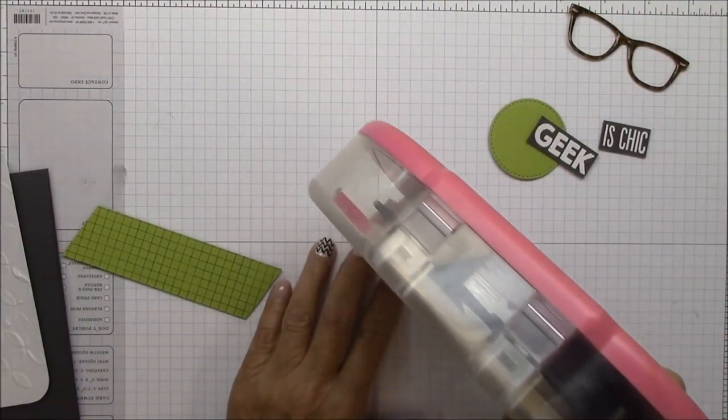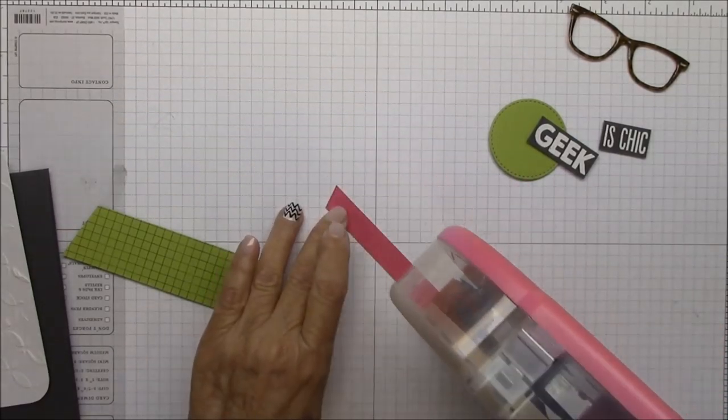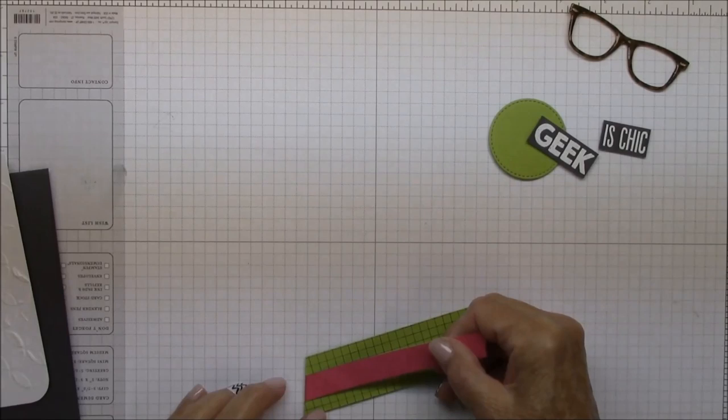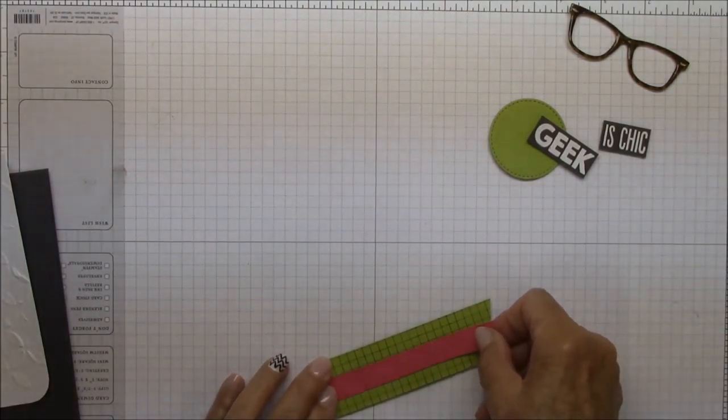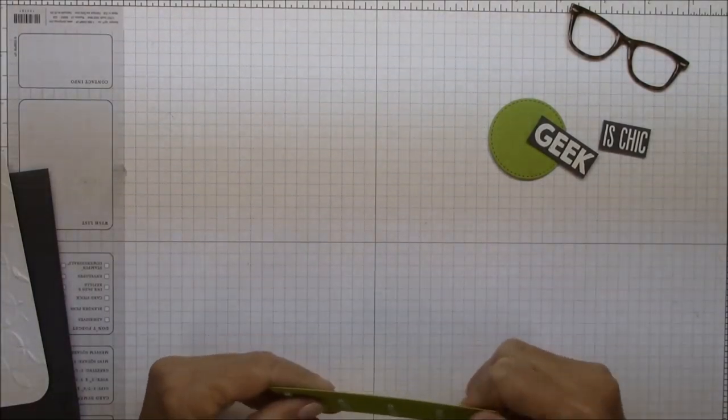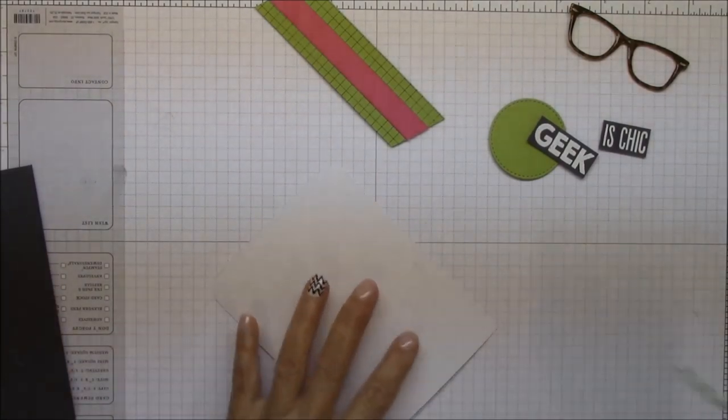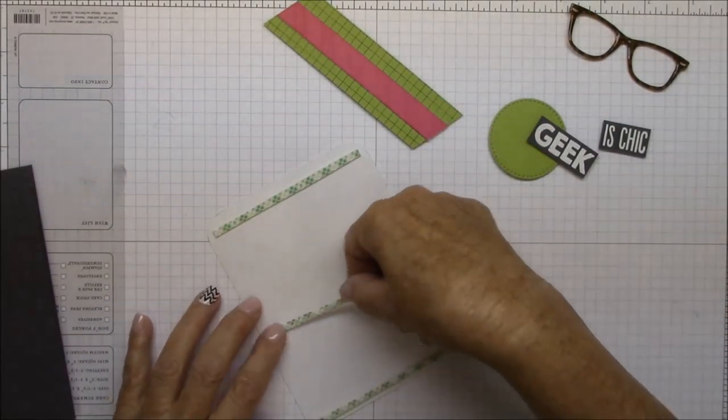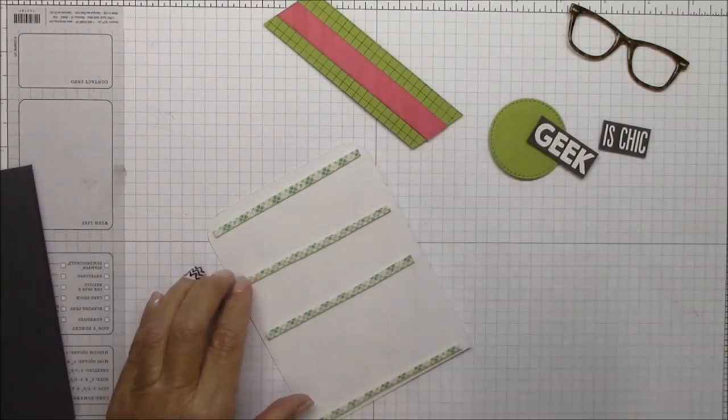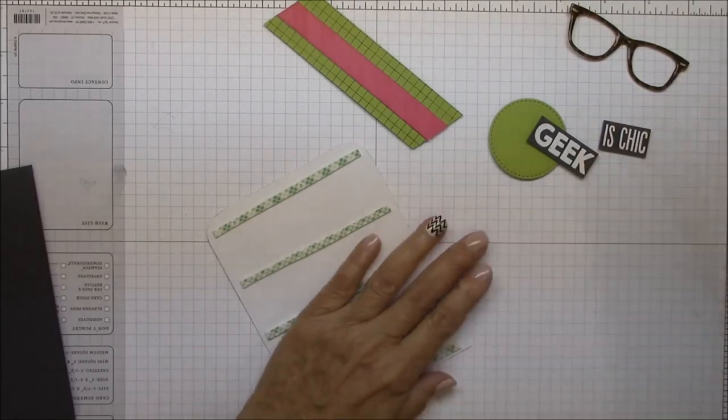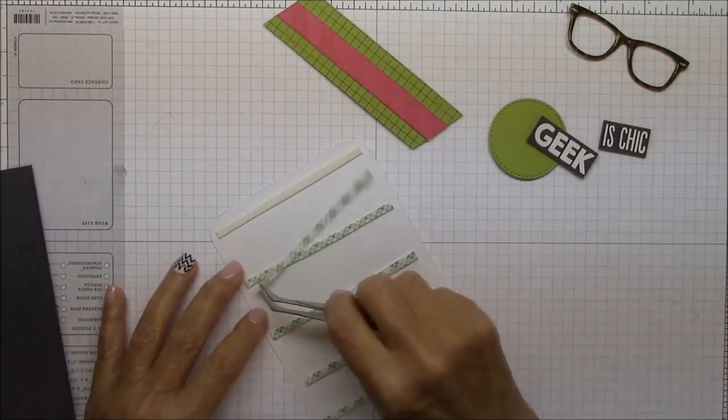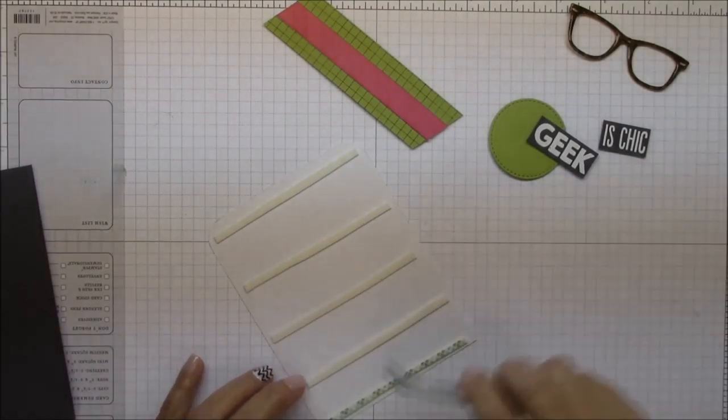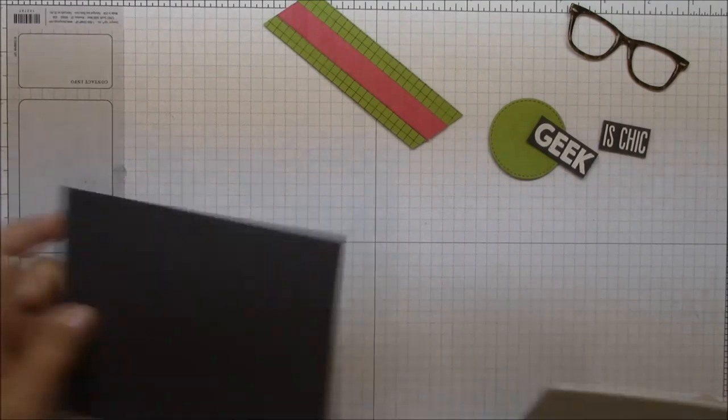So I'm going to assemble my colored cardstock stripe now. I'm just going to adhere the pink strip to the green. This card is for my favorite things Wednesday sketch challenge number 191. And now I'm going to put some foam on the back of the embossed panel before I pop it up on the card base.